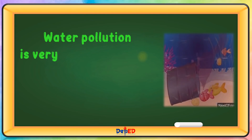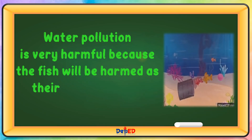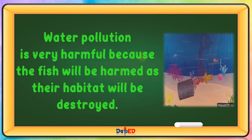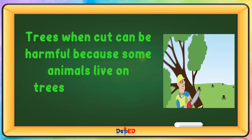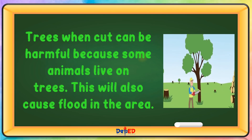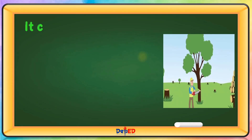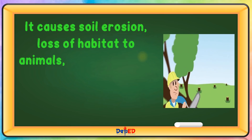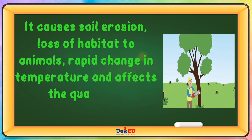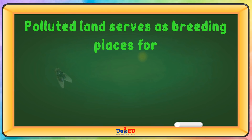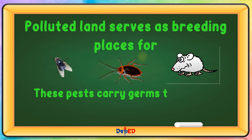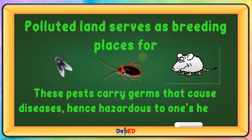Water pollution is very harmful because fish will be harmed as their habitat will be destroyed. It causes soil erosion, loss of habitat to animals, rapid change in temperature, and affects the quality of air and water that we breathe. Polluted land serves as a breeding place for flies, cockroaches, and rats. These pests carry germs that cause diseases, and are hazardous to one's health.